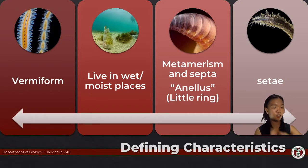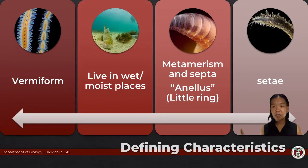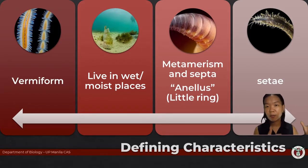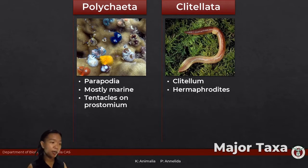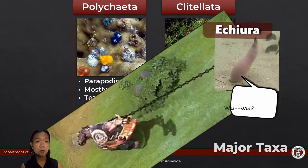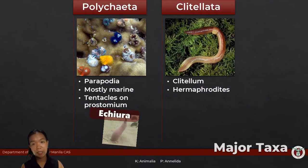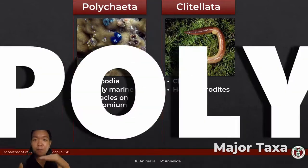Instead of discussing the typical anatomy of the group as a whole, we'll discuss it based on the major taxonomic groupings. The phylum of segmented worms is divided into two main groups: Polychaeta and Clitellata. In some taxonomical treatments you might also see class Echiura as part of this roster, though some subsume this under Polychaeta. The taxonomy of annelids is very much still a work in progress.